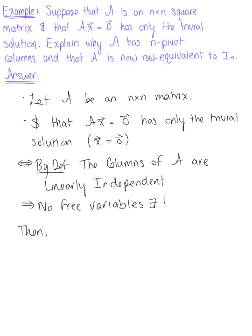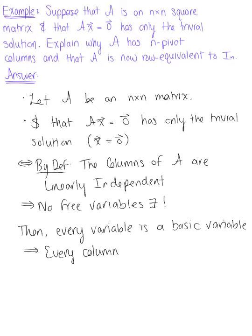We can conclude that every variable is a basic variable. If we have no free variables, then every variable must be a basic variable, which implies that every column must have a pivot position. Therefore, A must have n pivot columns.